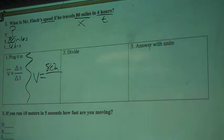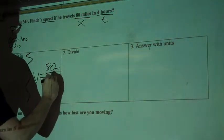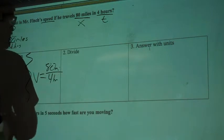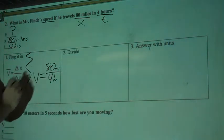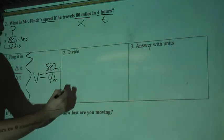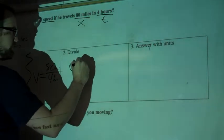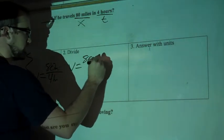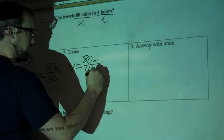And time, change in time is 4 hours. So I'll write 4 HR, 4 hours. Okay, divide. So now we have to divide these two numbers. So I'm going to rewrite my whole equation. V equals 80 miles over 4 hours.